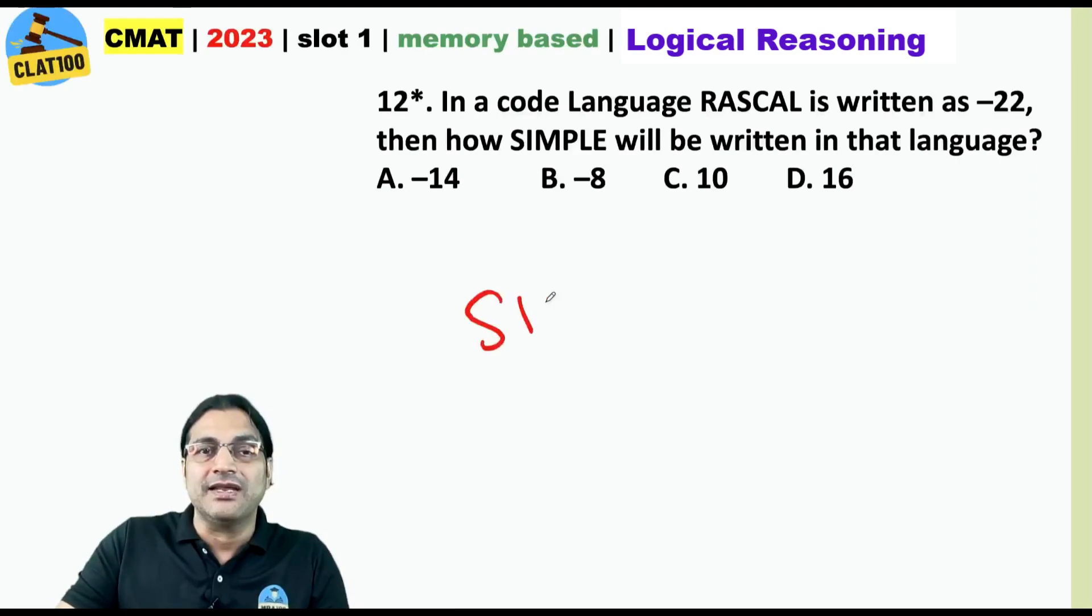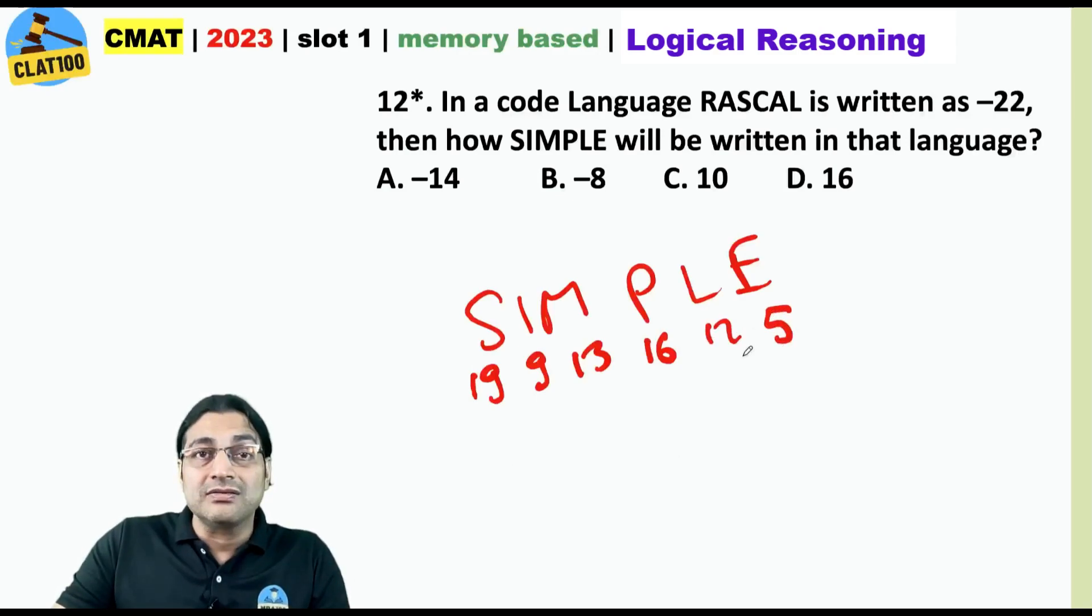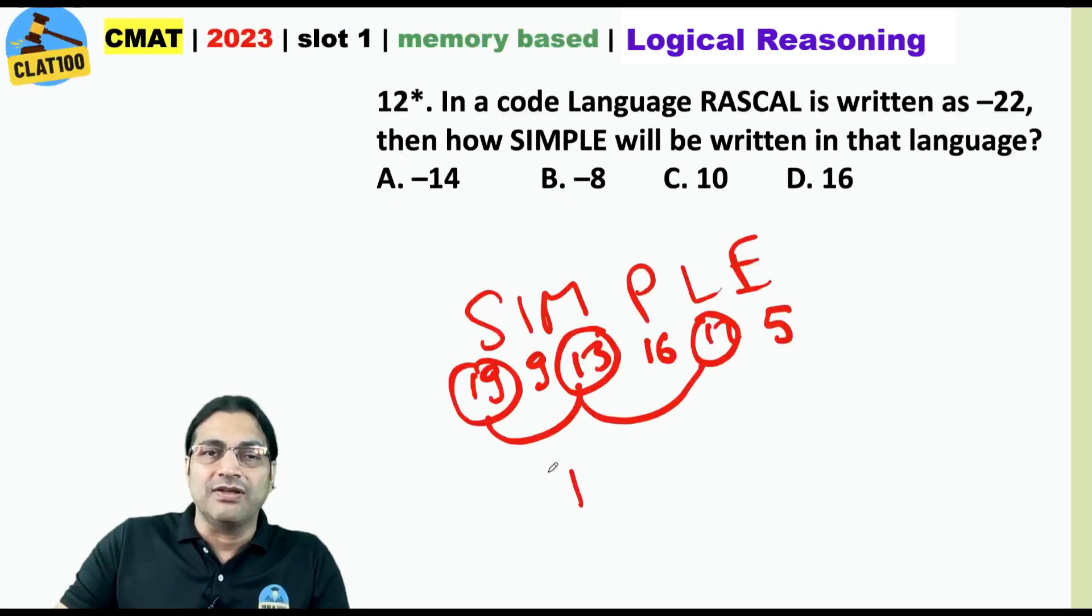This is 19, 9, 13, 16, 12 and 5. Go for the alternate terms. 19, 13, 12. What is the sum? 19 and 13, 32 and 12, 44. 16, 9, 25 and 5, 30.